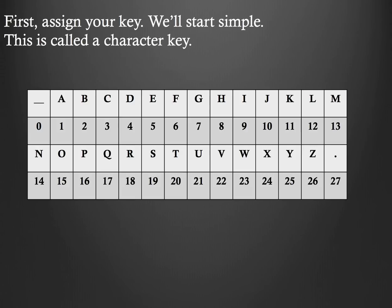First, we're going to assign a key, and we're going to keep it simple. This is what's going to be called your character key, and a character key simply assigns every letter of the alphabet to a number. Now, you'll notice here we have the number zero, and we also have the number 27. Zero is going to be used to represent a space, and 27 is going to be used to represent a period. Most codes and ciphers, though, they won't use those.